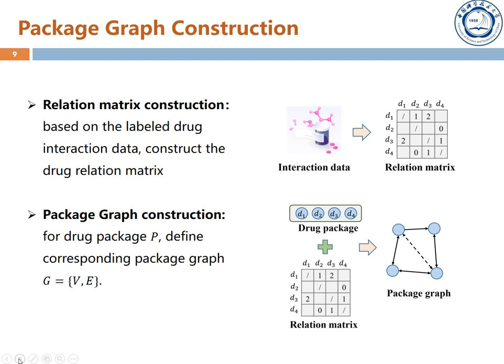Compared with traditional item recommendation, the core problem of drug package recommendation is how to get the representation of drug packages considering the interaction between drugs. Therefore, we propose to utilize graph models to solve this problem. We first construct a drug relation matrix based on the labeled drug interaction data. Then for drug package P, we define a corresponding package graph G. The node attribute is the drug embedding, and the edge attribute will be discussed in detail later. The topology is defined by the relation matrix and the frequency of drug co-occurrence — that is, if two drugs are recorded in DrugBank or their co-occurrence proportion is larger than a threshold, the corresponding edge exists.